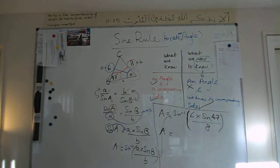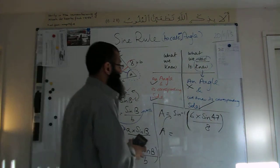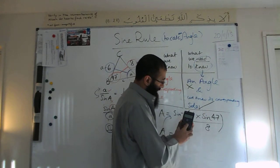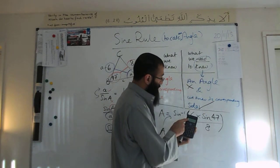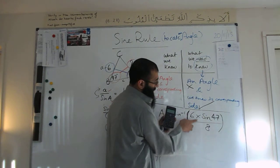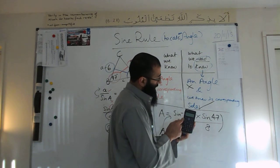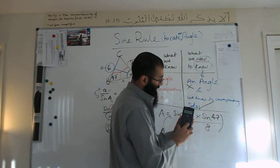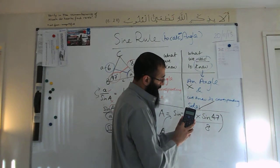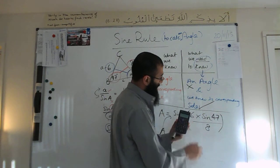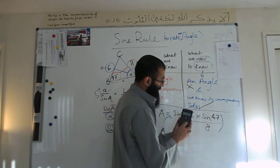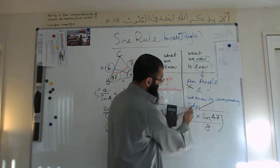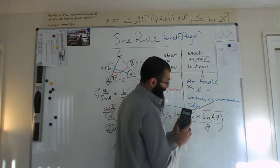Let's get a scientific calculator out. Press shift and then the sine button — that gives you sine minus one. Then press the fraction button to get the top and bottom parts. Type in six times sine of 47, close the bracket, bring it down, divide by eight. Press replay, take it back up, and close the bracket. Press equals.